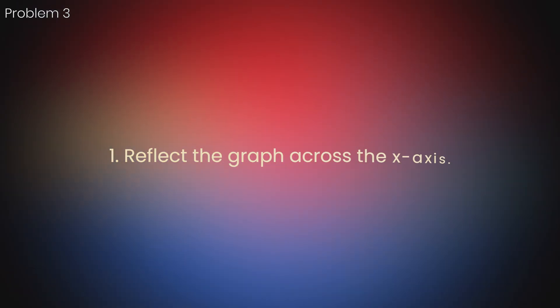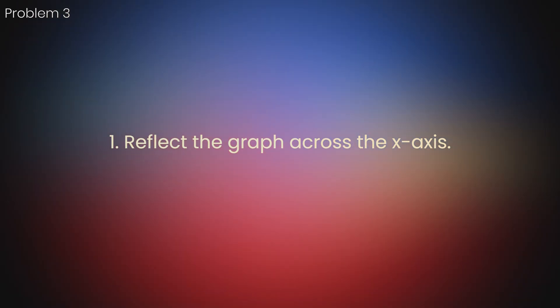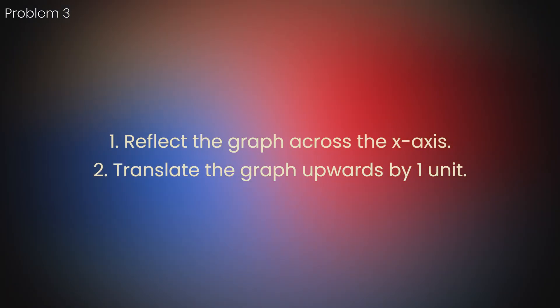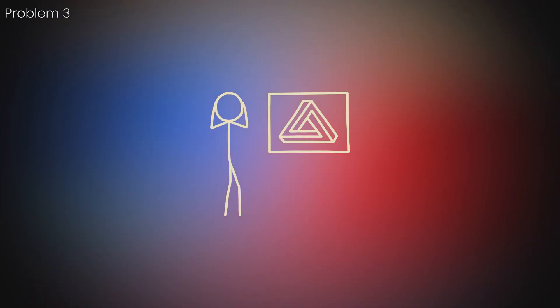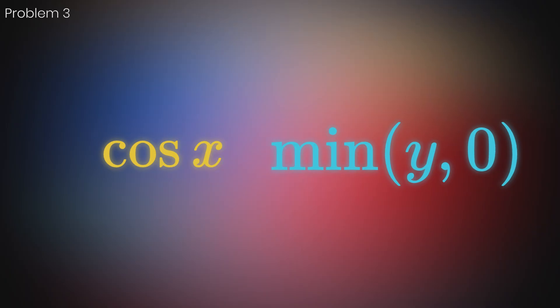Reflect the graph across the x-axis, translate the graph upwards by one unit, and stretch the graph along the x-axis by a factor of 2. At first, this seems impossible to do without drawing the graph first. You've never seen an equation containing both a trigonometric and minimum function.